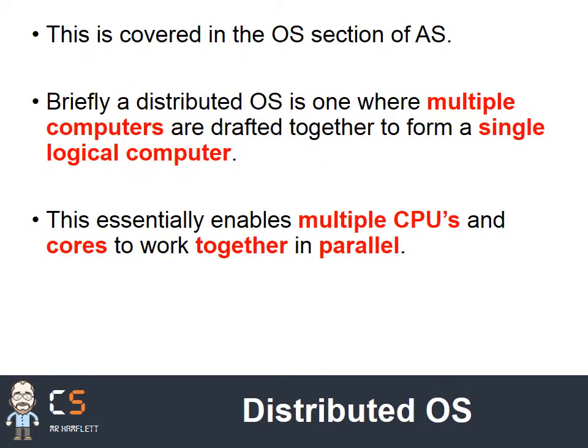A distributed operating system will be covered in a later video as part of the operating systems specification. Briefly, this is where lots of different computers all work together to form a single logical computer. So if I've got an IT lab with ten computers, all of those can be linked together in a network and act as if they're one single computer, allowing me to make use of all those separate CPUs to work together in parallel.